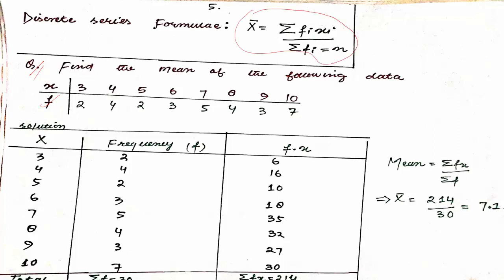So you will have x given and f given, and you will be asked to calculate the mean. As we saw in the formula, you first need to take the product of fᵢ and xᵢ, then take the sum of those products in the numerator, and in the denominator take the sum of all frequencies and divide by that total.